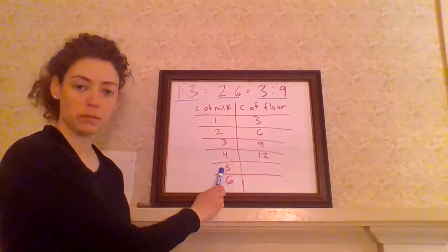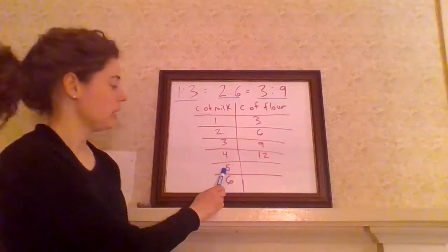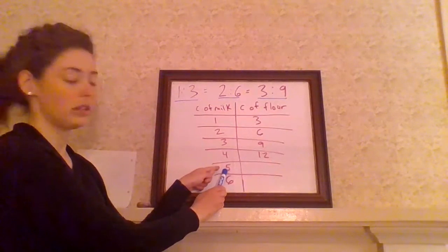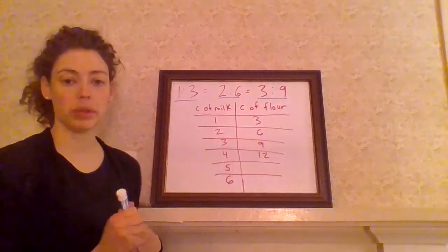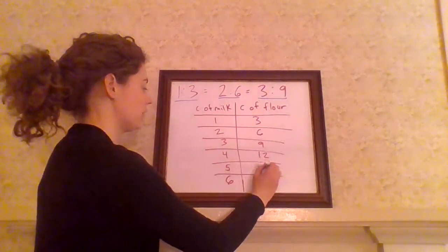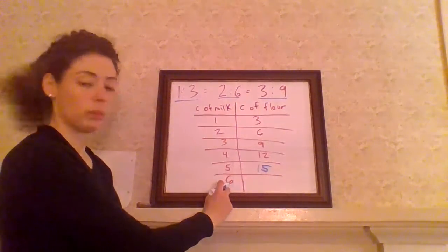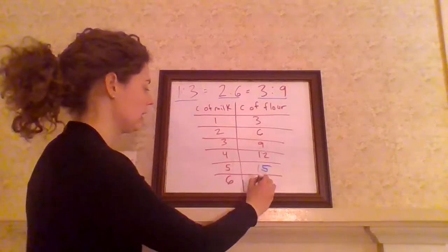If we have five cups of milk, how many cups of flour? So we know the ratio is that for every one of milk, we have three of flour. So we can multiply by three to get 15. And we can multiply six by three to get 18.